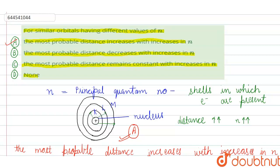The second option states the most probable distance decreases with increase in N — no, students, the distance increases, not decreases. So option B is incorrect. The third option states the most probable distance remains constant with increase in N — it does not remain constant, it increases. So option C is incorrect. The none option is also incorrect.